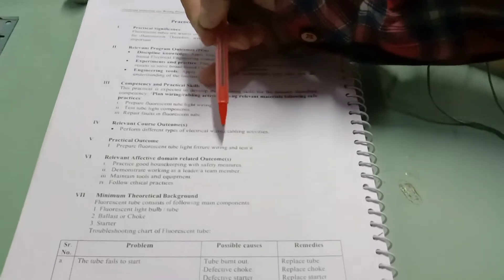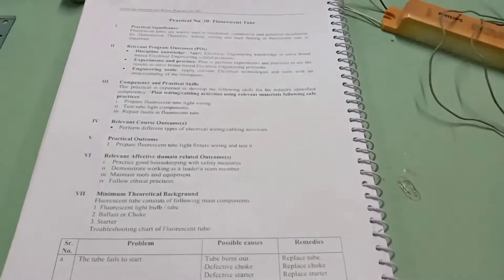In this practical our practical outcome is to prepare fluorescent tube light fixture, wiring and we have to test it.